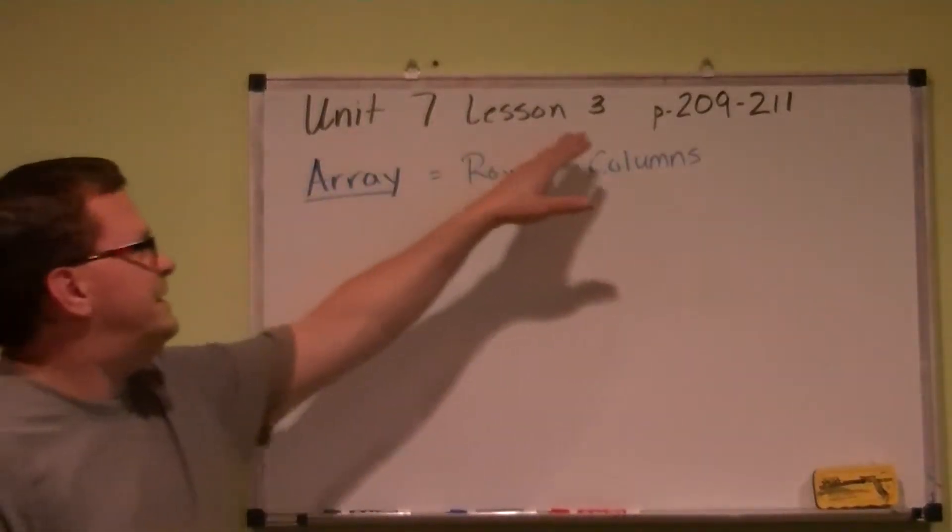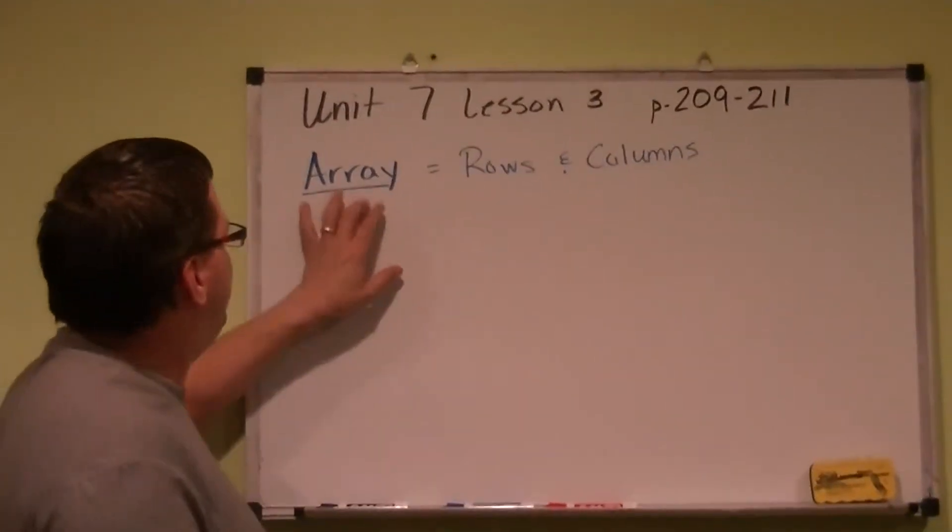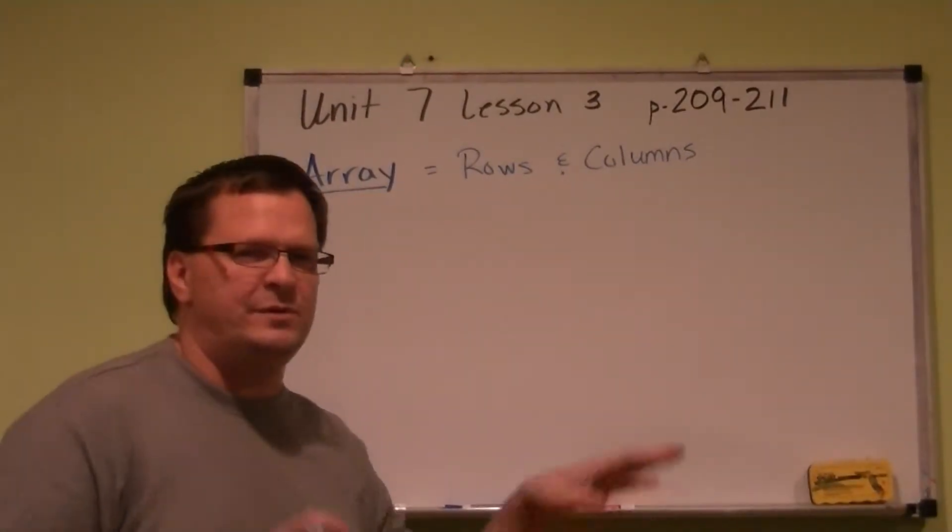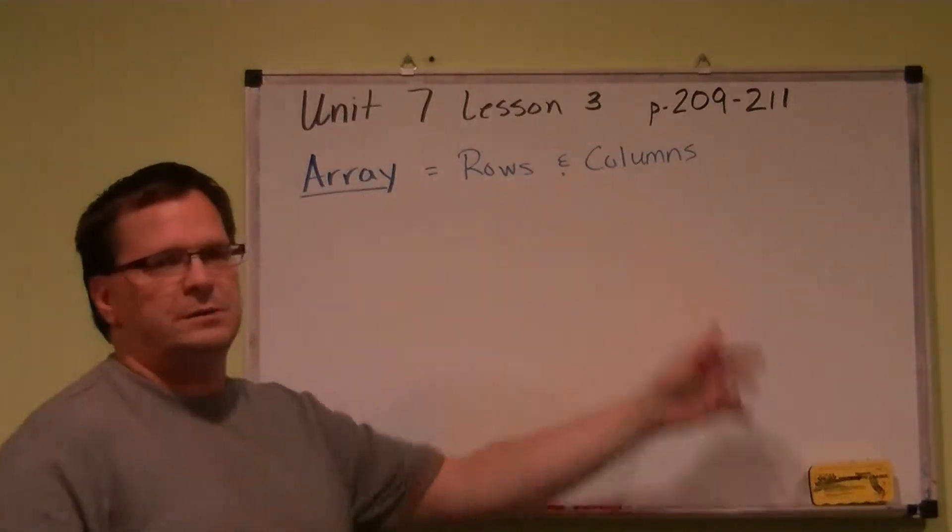Alright, today we're going to be talking about Unit 7 Lesson 3 on pages 209 to 211. We're talking about arrays. Some of you have done arrays before, you told me. But now we're going to be talking about what they are. They're rows and columns.